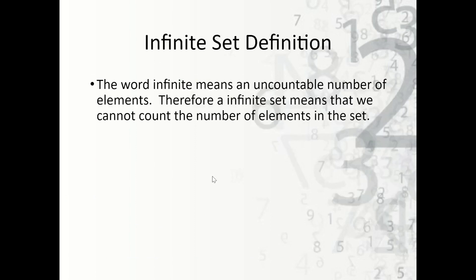Now let's talk about the definition of infinite set closure. Infinite means an uncountable number of elements — it goes on to infinity, keeps going forever. An example would be the natural numbers: we can count 1, 2, 3, 4... and no matter what number we stop at, there's always a number past it. Therefore, an infinite set means we cannot count the number of elements in the set. The opposite is a finite set, where there are a countable number of elements — for example, natural numbers between 1 and 10, which stops and we can't keep going.